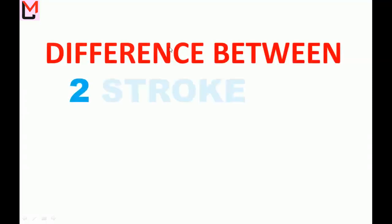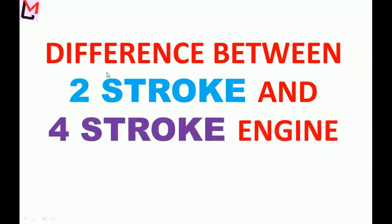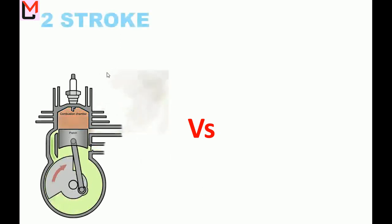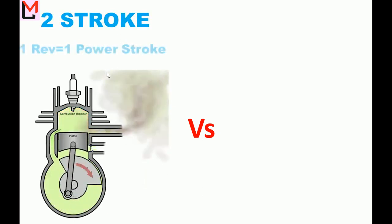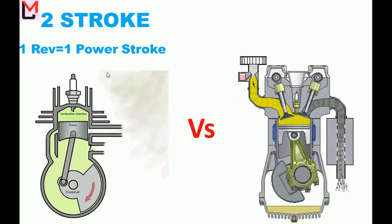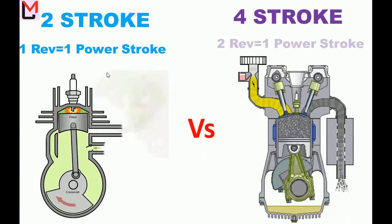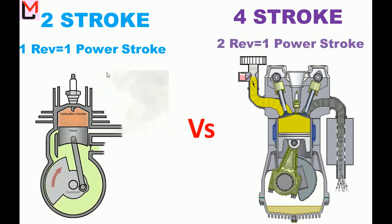Difference between two-stroke and four-stroke engine. In a two-stroke engine, one revolution of the crankshaft is equal to one power stroke. In a four-stroke engine, two revolutions of the crankshaft are equal to one power stroke.